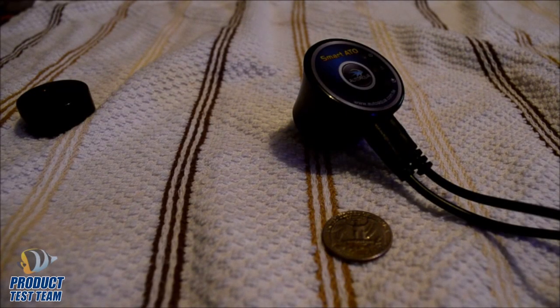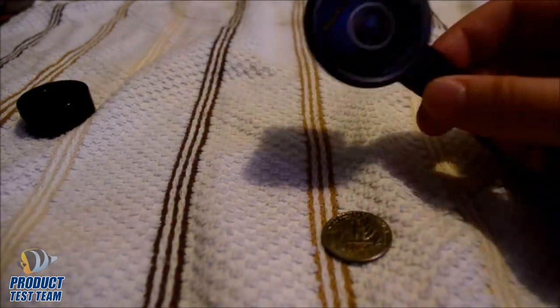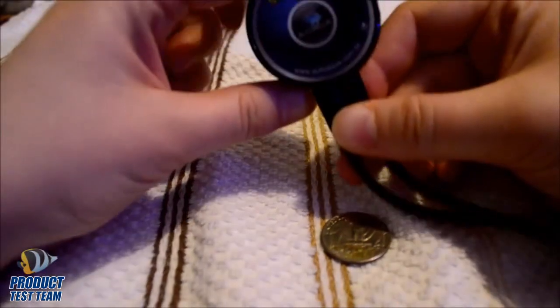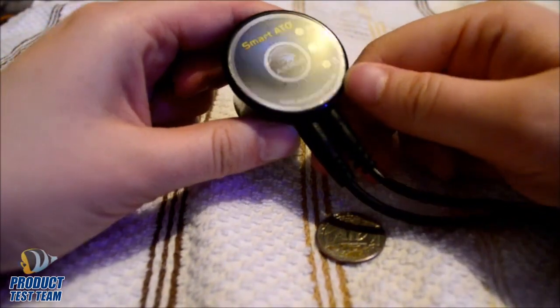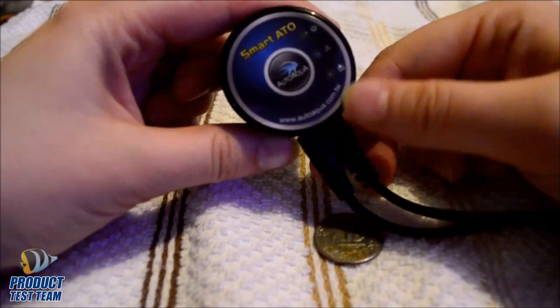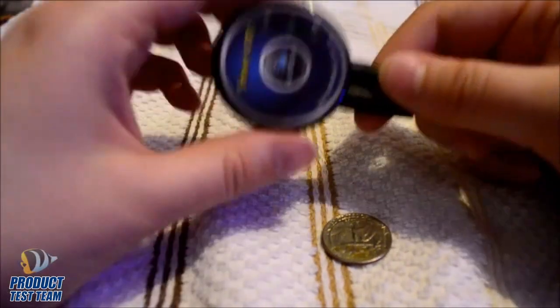This is a review for the Smart Auto Top Off by Auto Aqua. Right here, as you can see, this is basically the main part, the smart part I guess you would say. It's got three little lights: power, warning, and when the water's low it'll light up. It's really easy to assemble.